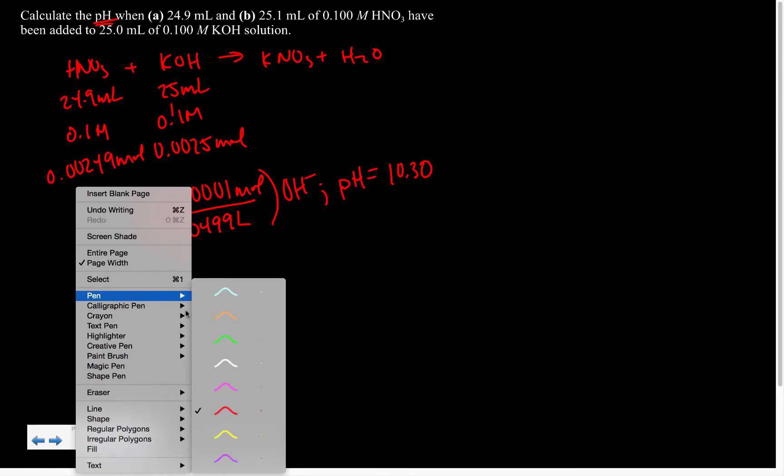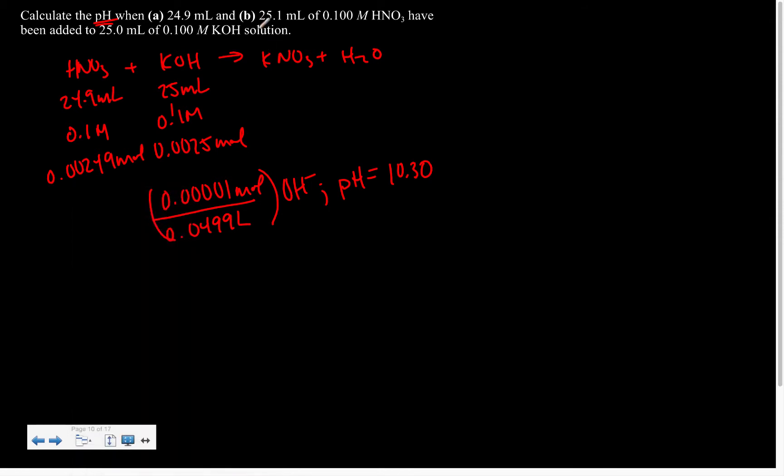Switching up to problem B, now we have 25.1 mL of our 0.1 molar HNO3 with the same scenario of 25 mL of 0.1 molar KOH. So in this case, we're going to get to moles again, and when we do, we realize that in this case the KOH is limiting and we actually have excess HNO3.